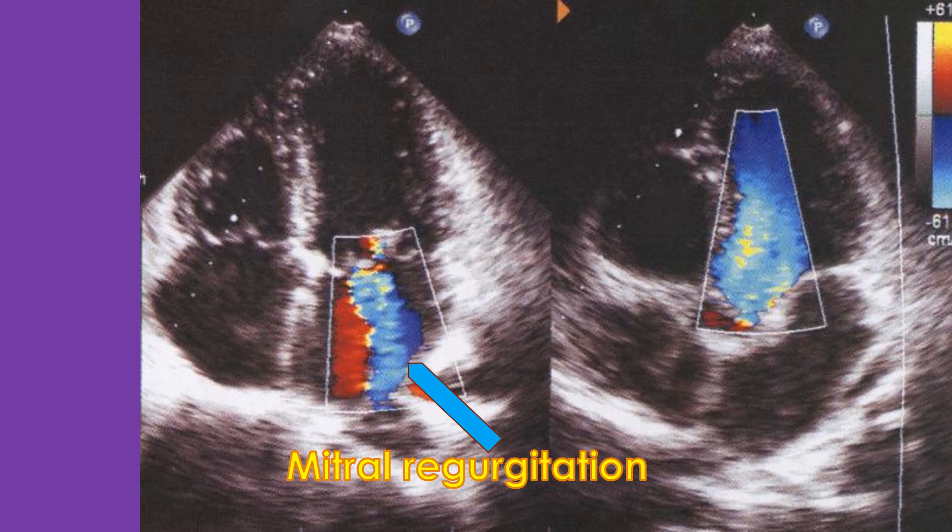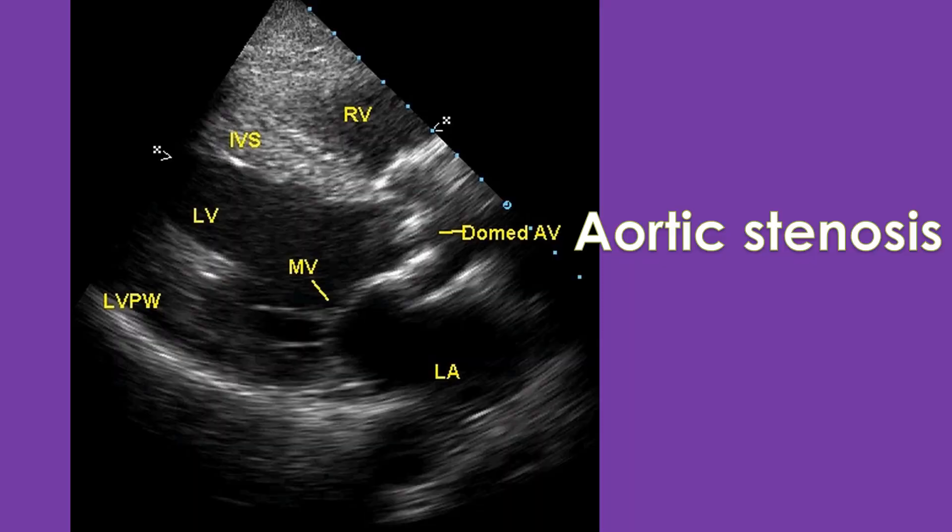These valves can be abnormal either as a birth defect or acquired later in life due to diseases. If a valve is narrowed, it is called stenosis. There can be mitral stenosis, aortic stenosis, tricuspid stenosis, and pulmonary stenosis, or a combination of these. There can also be stenosis and regurgitation in the same valve. Stenosis can be graded as mild, moderate, and severe. The area of the narrowed valve may be mentioned in certain cases.